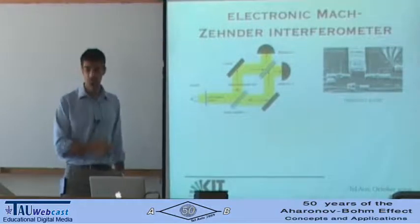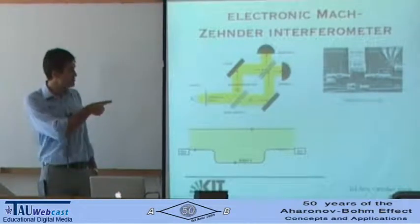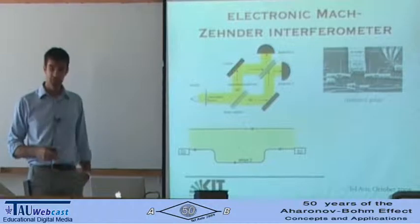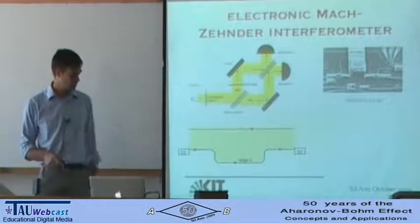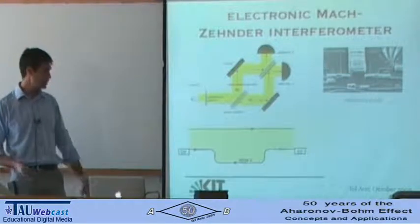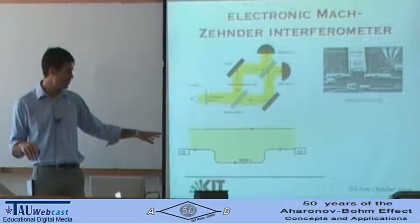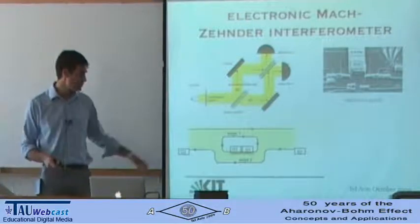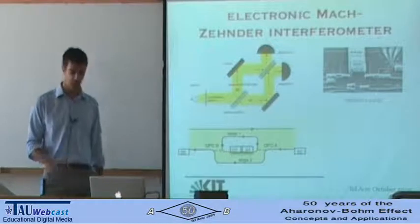Realizing this system with electrons is a difficult task, but it has been achieved recently. The difficulty is that in this interferometer you need the electrons not to go multiple times in the loop, but just once. The way this has been overcome is to use edge states of electrons in the quantum Hall effect — a two-dimensional electron gas with a strong magnetic field in the quantum Hall regime, where quasi-particles move along chiral edge states.